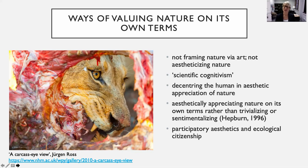I'll say something in a moment about participatory aesthetics and ecological citizenship. I have this amazing photograph by Juergen Ross — a 'carcass eye view' — which was a runner-up in the worldwide photography competition some years ago. It really drives home this conflict: this is a beautiful photograph, but look at the subject matter. This is a predator-prey relationship — a lion eating a carcass. It's a tragic moment for the prey, the dead animal, but a great moment for the lion who is being fed.